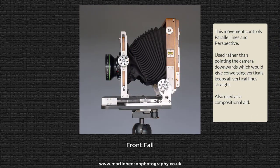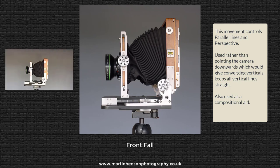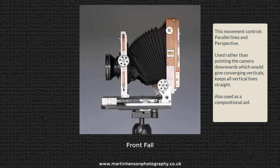In this picture the lens is dropped on the front standard — this is the opposite of front rise, called front fall. If you want more at the bottom of the picture and point the camera down with a fixed focal length lens, you'll get converging verticals. Using front fall, the lens is moved downwards while keeping the camera level, avoiding that distortion.